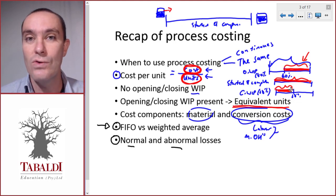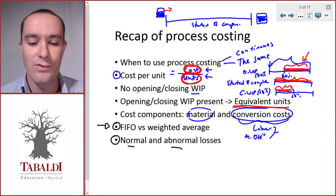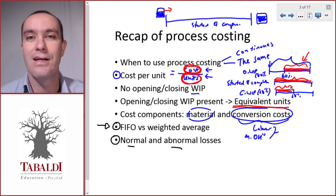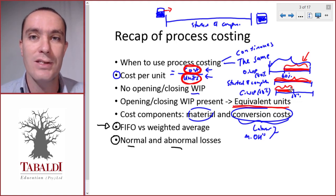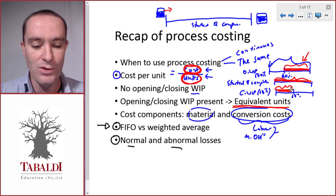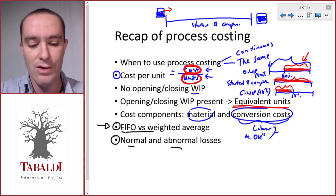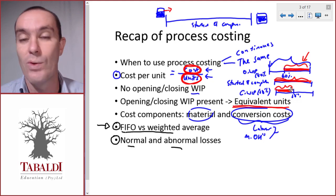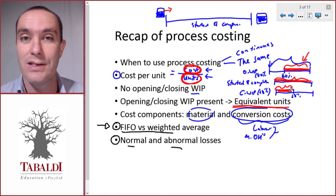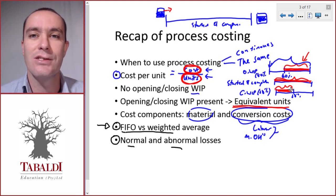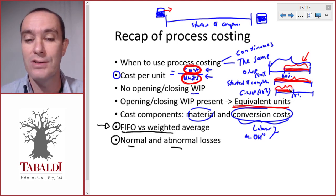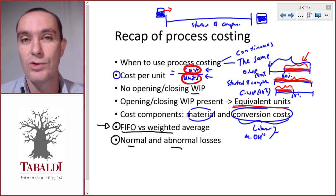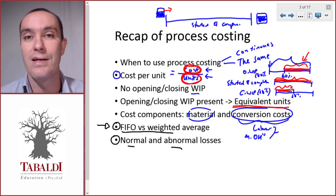If anything in this recap of process costing is unfamiliar to you, or you've forgotten how to do it, then I strongly advise that you go through the revision section of process costing. There's also a revision section on the first-in first-out and weighted average methods of inventory valuation. There's also a section on job costing — you don't need that for process costing, but it's something that could be asked in an exam.